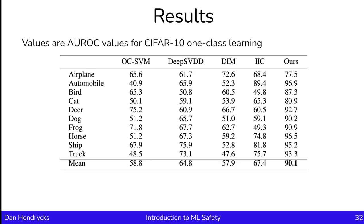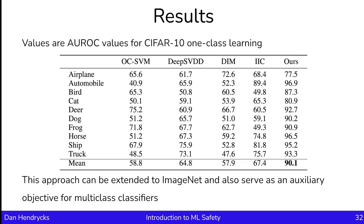Results with rotation plus geometric transformation prediction for one-class learning show fairly good out-of-distribution detection, with an AROC of approximately 90%. It also compares favorably to other anomaly detection methods. This method can be extended to ImageNet and can serve as an auxiliary objective for multi-class classifiers—one can improve a multi-class classifier's anomaly detector with this one-class learning loss. This shows that self-supervised learning can be useful for improving out-of-distribution detection.